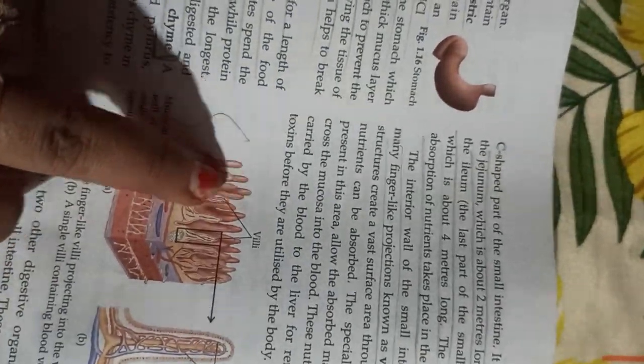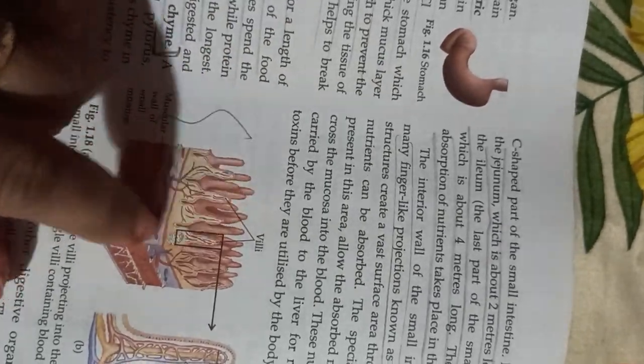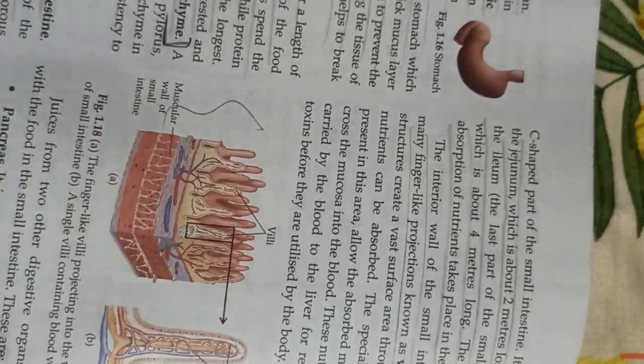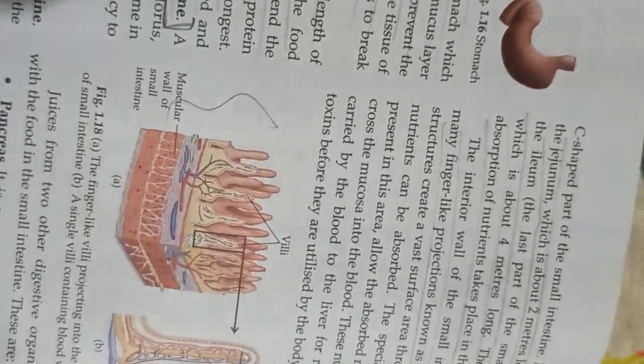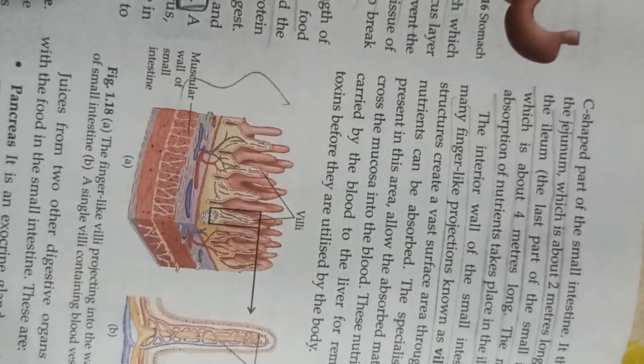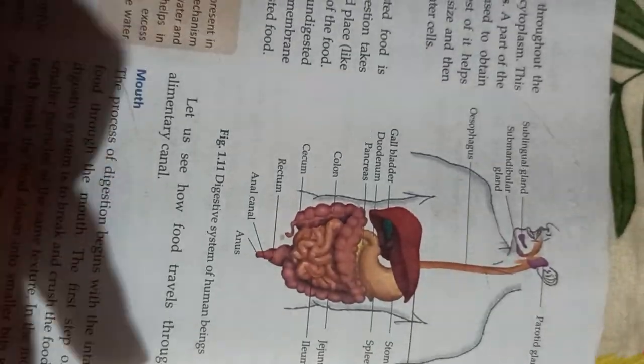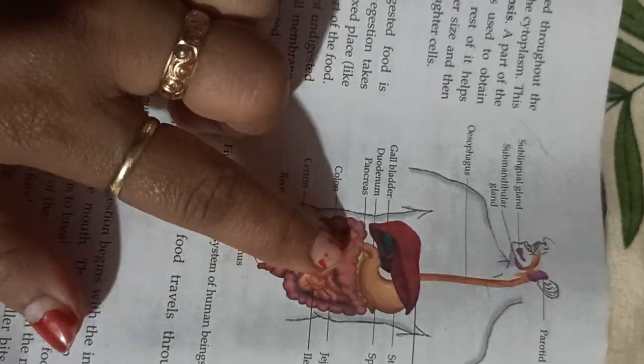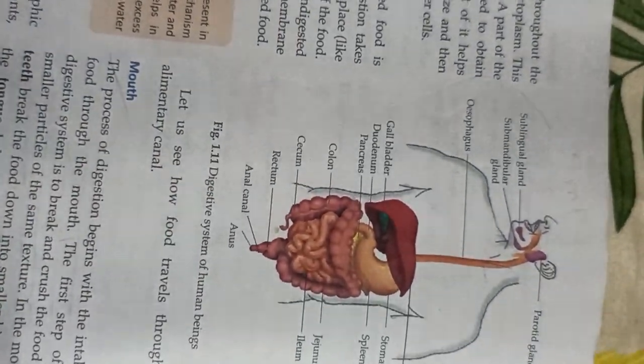Just see, these are finger-like projections you can see. It resembles like fingers and these finger-like projections are called villi, which help in the absorption of nutrients present in food. This digested food gets absorbed through the small intestine with the help of villi.